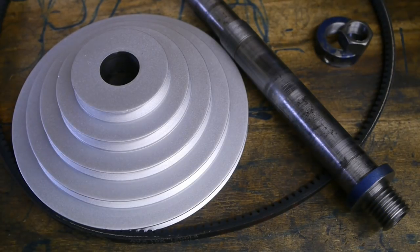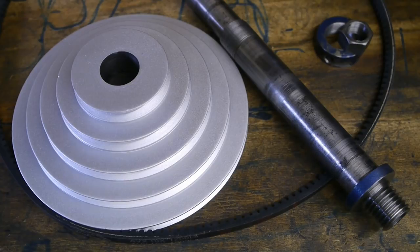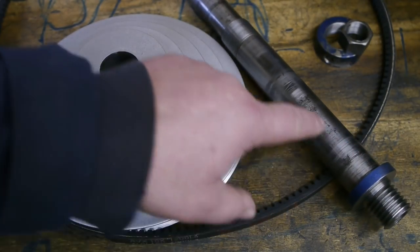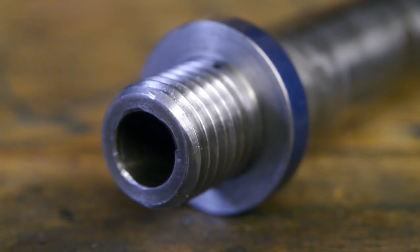But before I start reassembling I'm going to try and see if I can clean up these rough journals here. I want to mount the spindle in the lathe so I can polish up the journals.